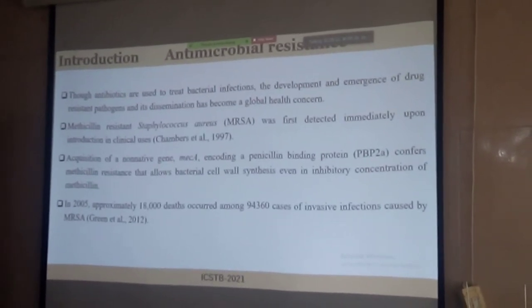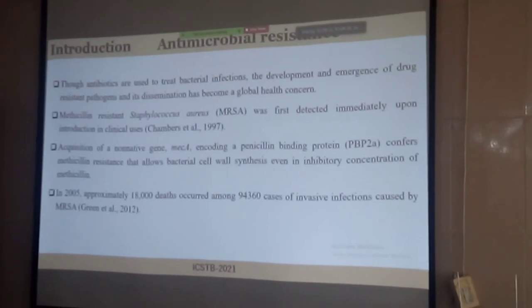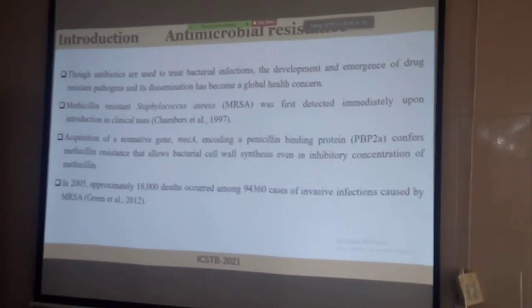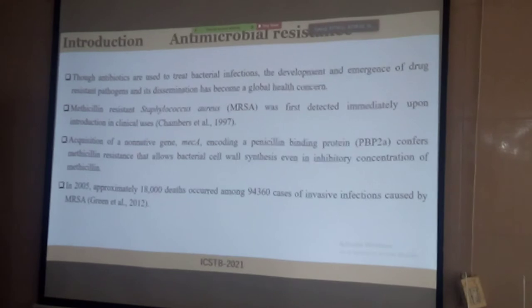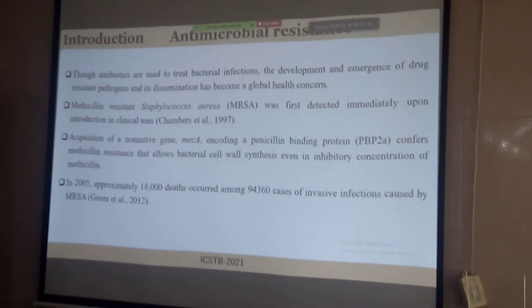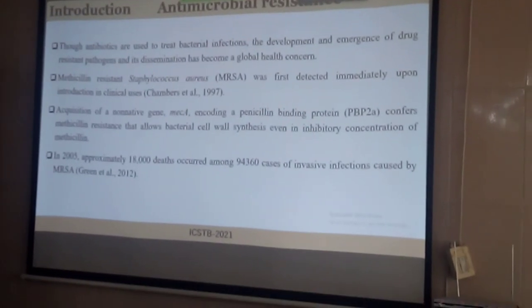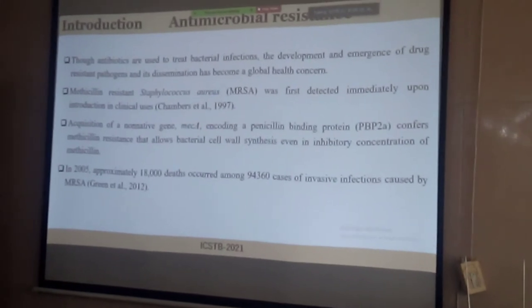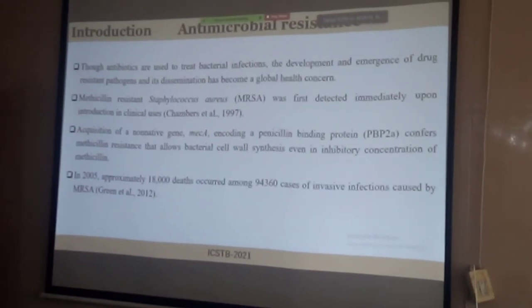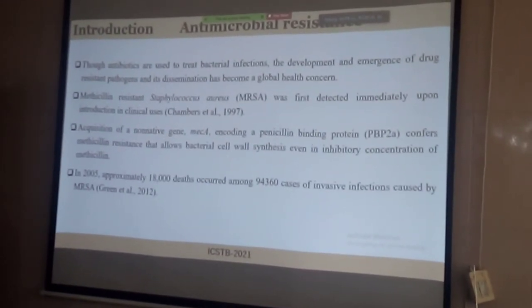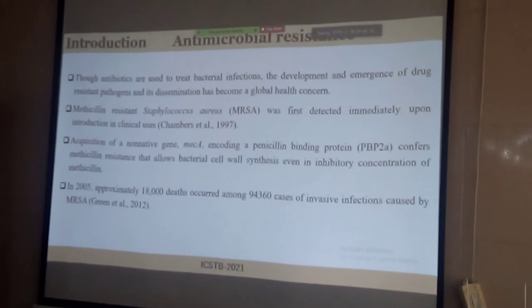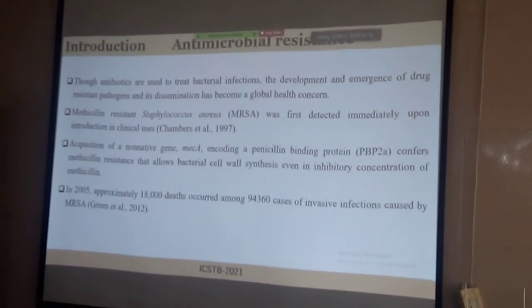Doctors are prescribing antibiotics to treat Staphylococcus aureus. But we know the indiscriminate use of antibiotics leads to the emergence and dissemination of drug-resistant pathogens in the environment, which is a public health concern. Interestingly, Staphylococcus aureus was once treated with methicillin, but shortly after the start of its use, it was found to be resistant toward methicillin — termed methicillin-resistant Staphylococcus aureus, or MRSA. The gene responsible for conferring resistance is mecA, which allows bacterial cell synthesis even at high concentrations of methicillin.